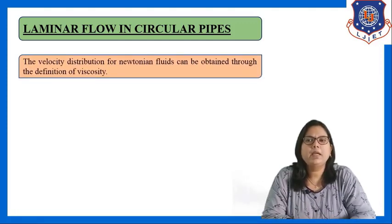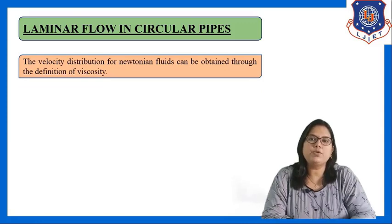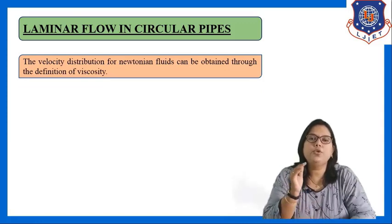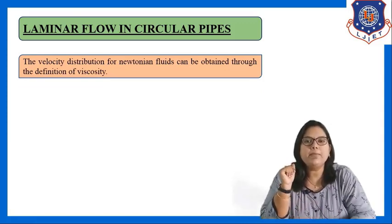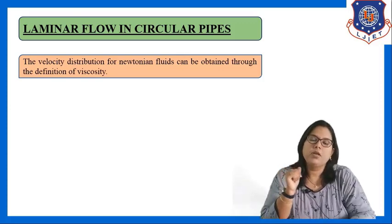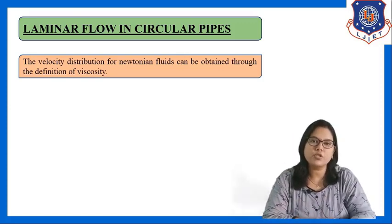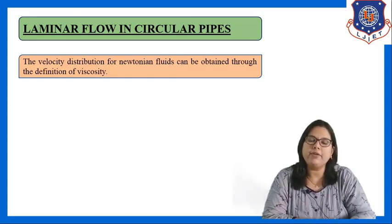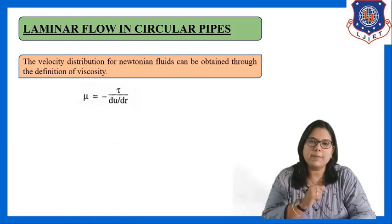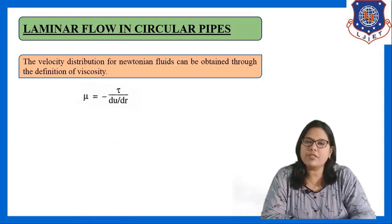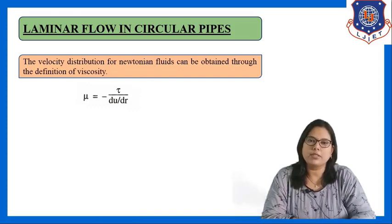The velocity distribution for Newtonian fluids can be obtained through the definition of viscosity. We all know about viscosity and what the definition of viscosity is — that was derived in Newton's law of viscosity. This is the formula for viscosity, or Newton's law of viscosity.